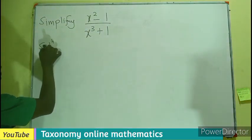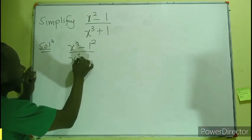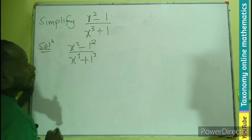So in the case of this, we can have x squared minus 1 squared, x to the power 3 plus 1 to the power 3.